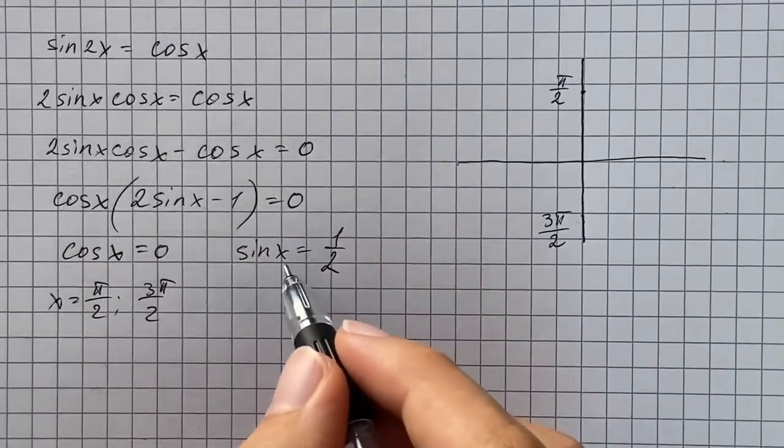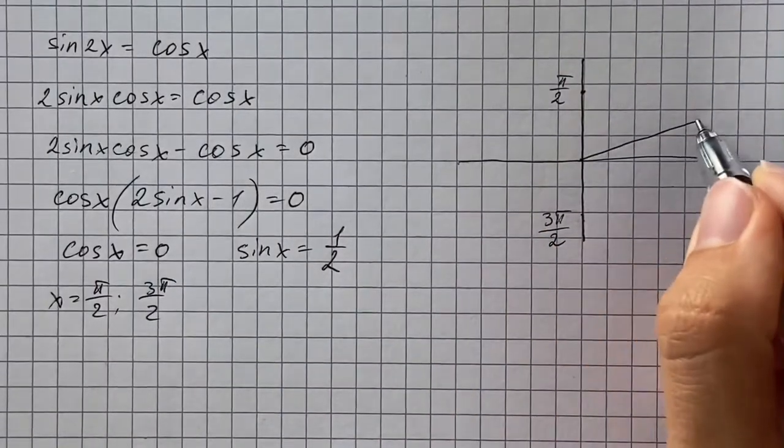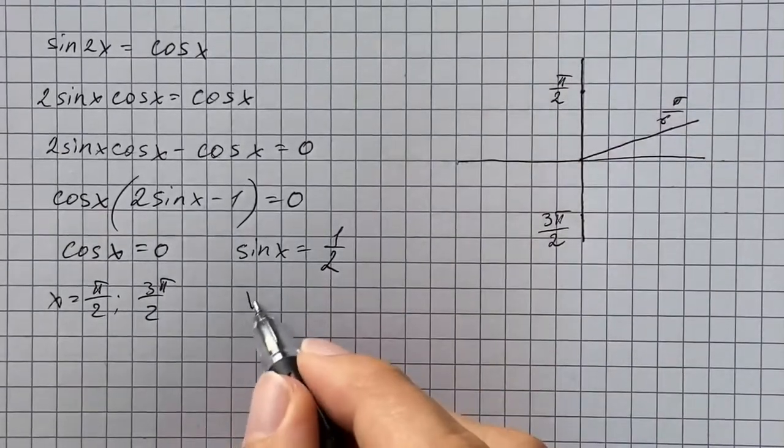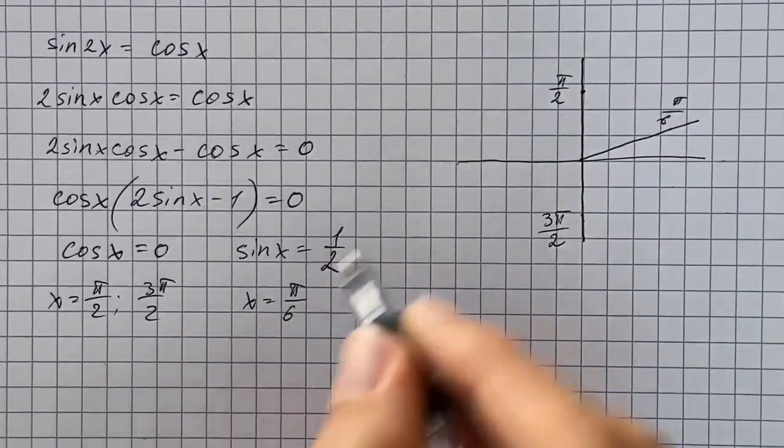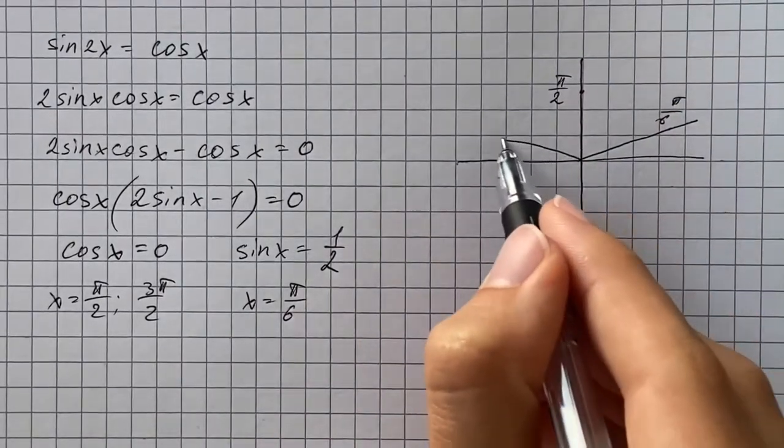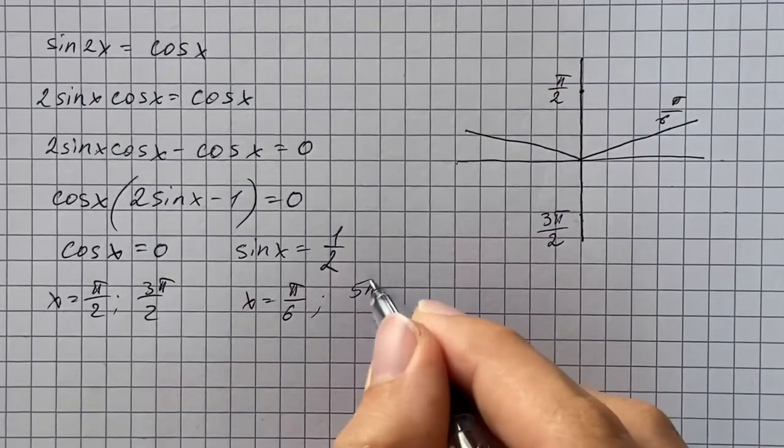And sine of x equals 1 half. This is going to be the y coordinate and that's going to be angle pi over 6, the first angle. And we're going to have another in the second quadrant, which corresponds to 5 pi over 6.